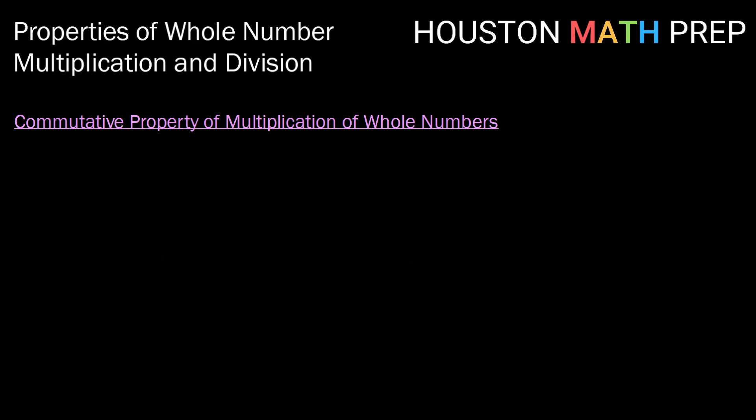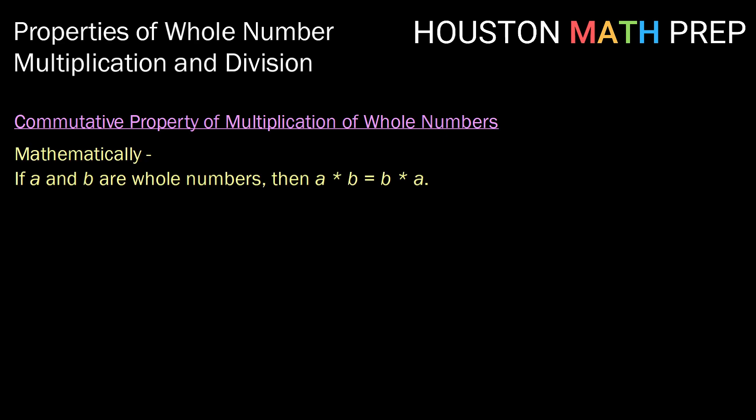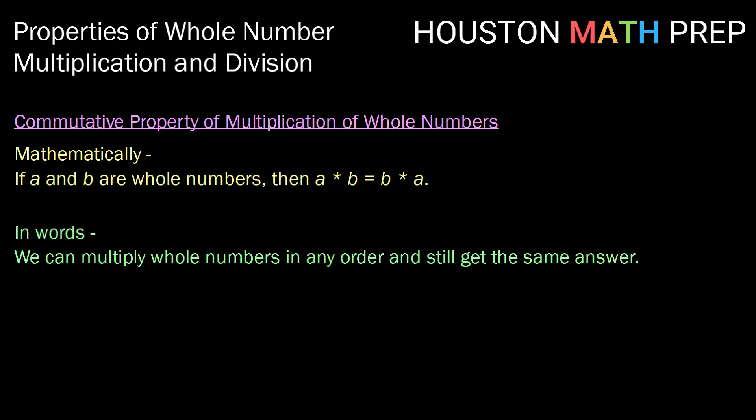Our next property is the commutative property of multiplication for whole numbers. Mathematically, this says that if a and b are whole numbers, then a times b should be equal to b times a. In words, we could say we can multiply whole numbers in any order and still get the same answer.